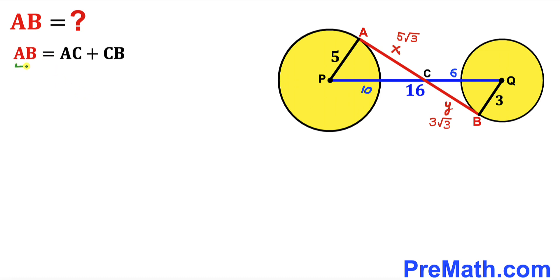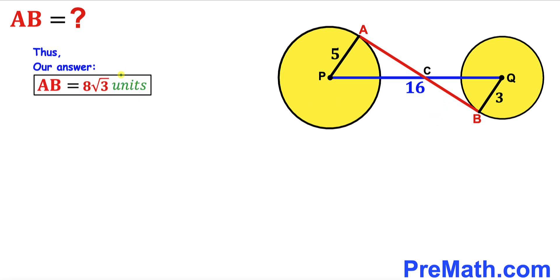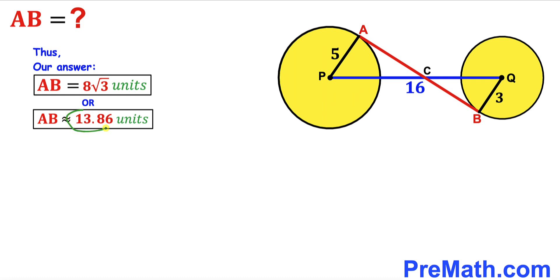Now we calculate AB. Recalling that AB = AC + CB, we have AC = 5√3 and CB = 3√3. So AB = 5√3 + 3√3 = 8√3 units, which is approximately equal to 13.86 units. That is our final answer.